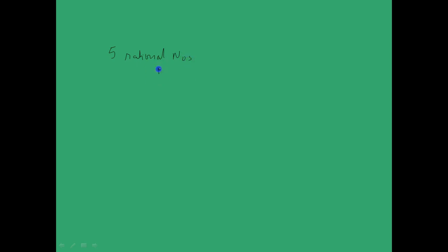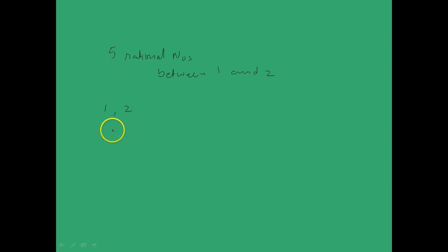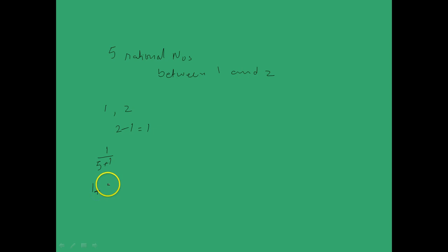Now if you wish to find say 5 rational numbers between 1 and 2, this is how you would go about it. There are many ways to do this, but one way would be to take 1 and 2, get the difference — that is 2 minus 1 which equals 1 — and divide that by 1 plus the number of rational numbers you require, that is 1 divided by 5 plus 1. So your step value is 1 by 6.